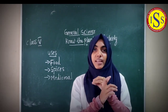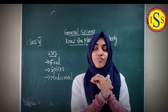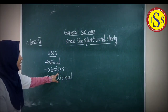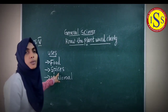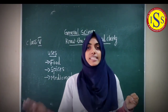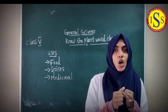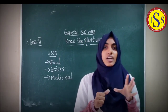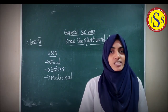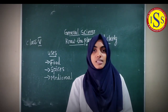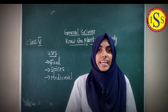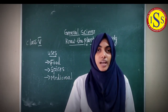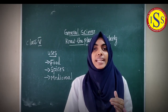The next use of plants is as spices. Spices include pepper, cloves, ginger, chili, coriander powder, cardamom, and cinnamon. These are the commonly used spices. Adding spices into food gives taste and good color.